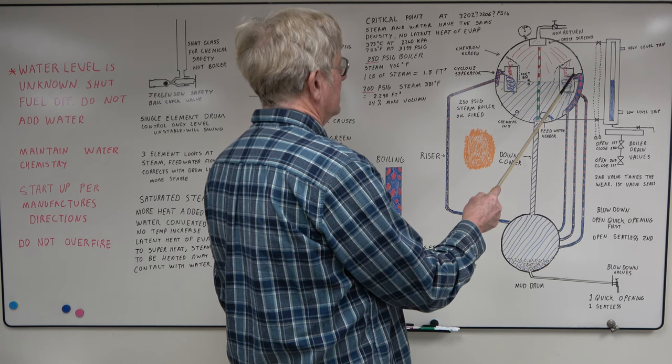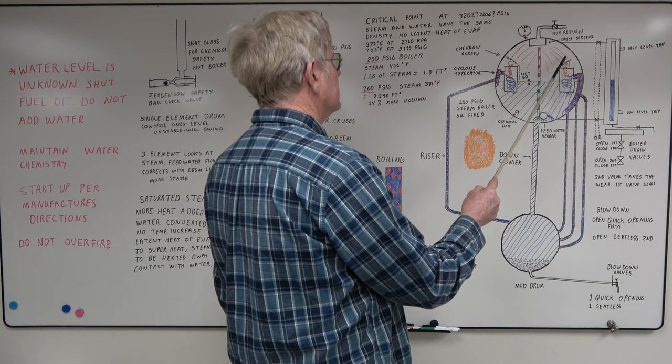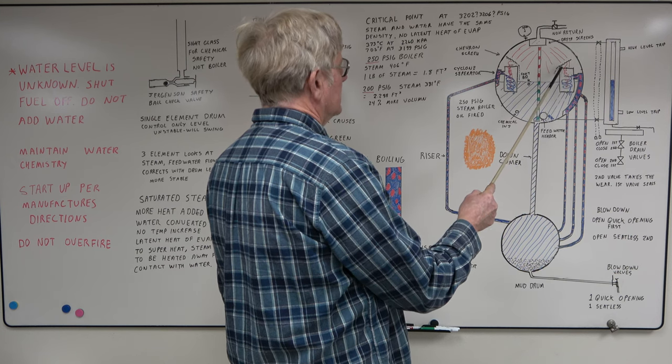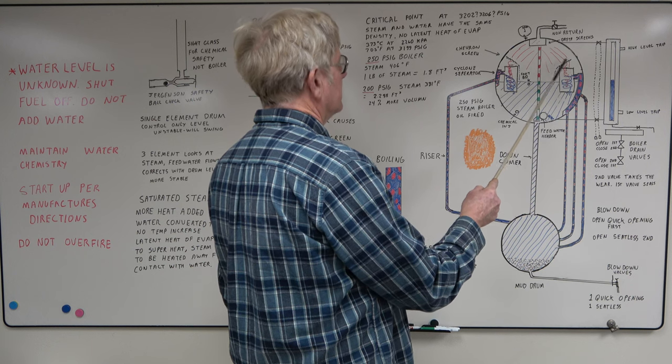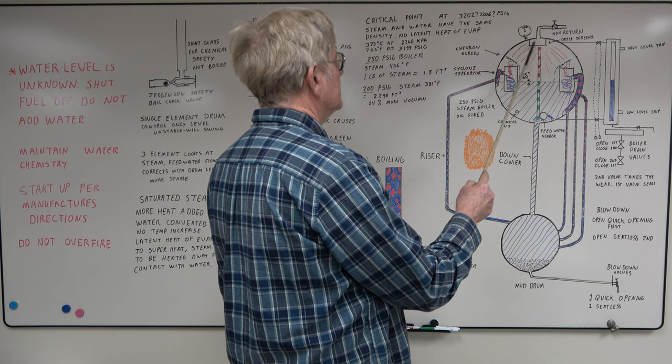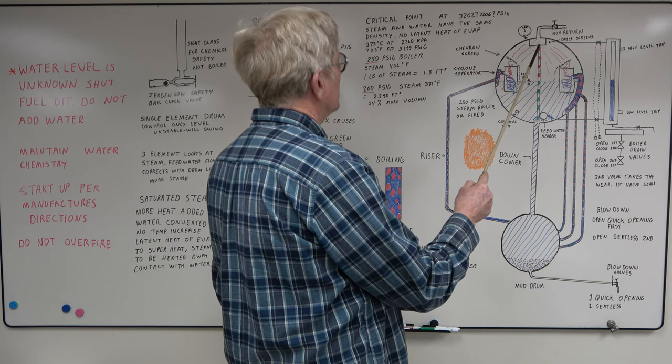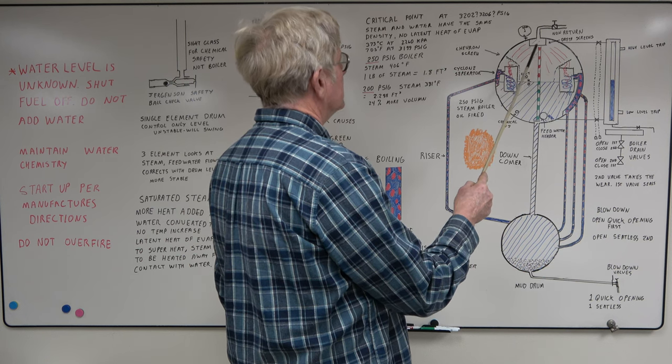The cyclone separator, it spins the mixture. The water's flung to the outside and drains out. Steam comes up the center. It goes through the chevron dryer screens. This creates a torturous path where the water droplets stick to the plates and then drain off. Up here we have another set of dryer screens. These can go across the boiler. The whole purpose of these is to dry the steam, get rid of any moisture droplets.